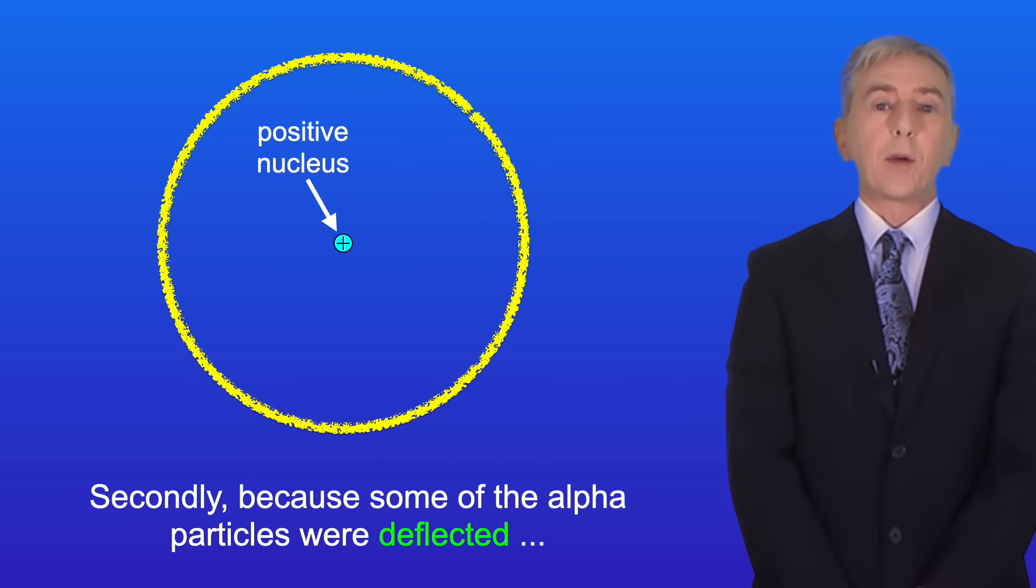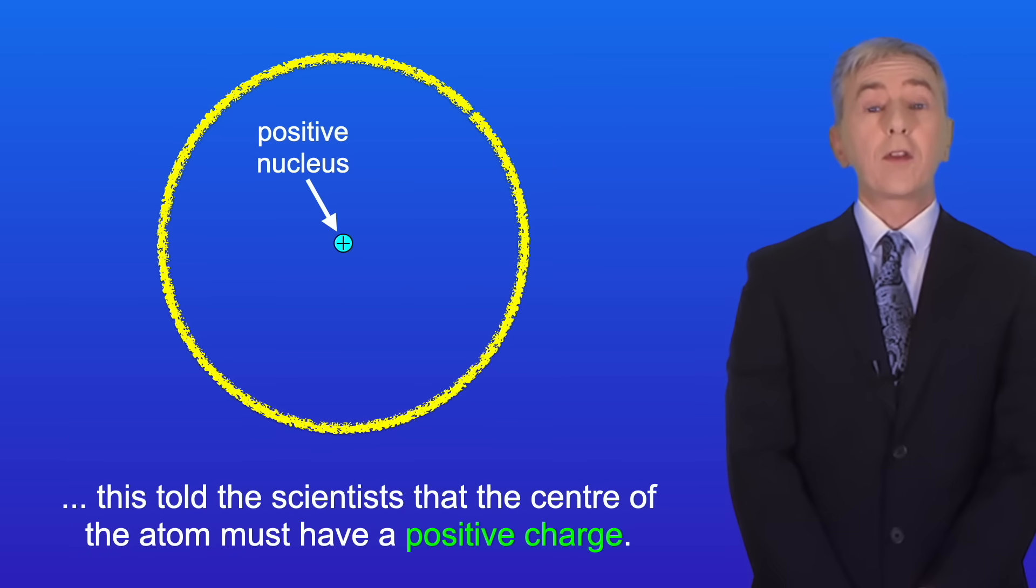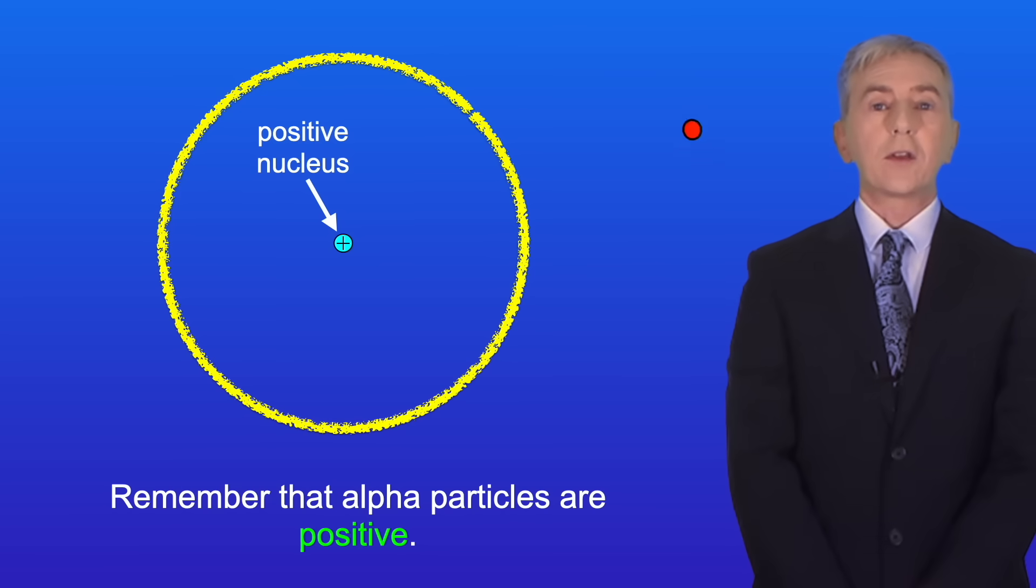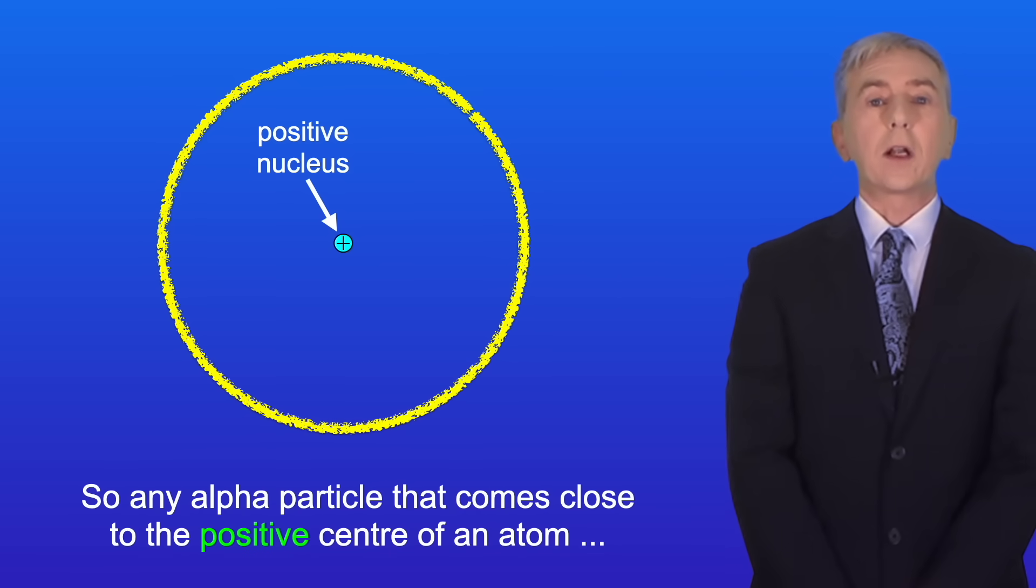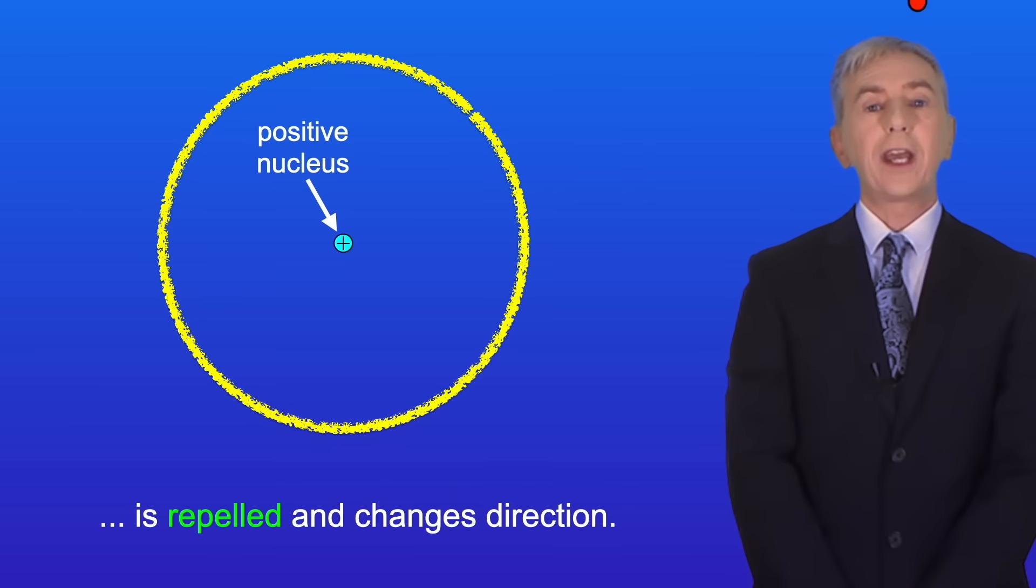Secondly, because some of the alpha particles were deflected, this told the scientists that the center of the atom must have a positive charge. Remember that alpha particles are positive, so any alpha particle that comes close to the positive center of an atom is repelled and changes direction.